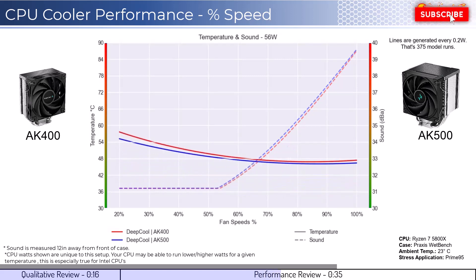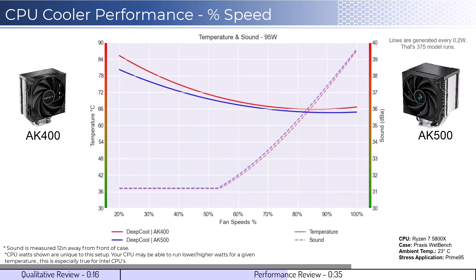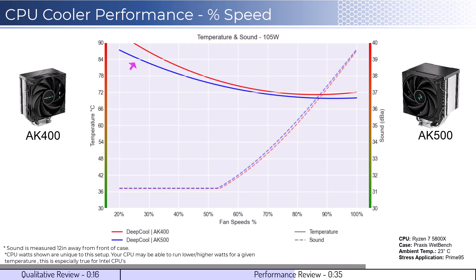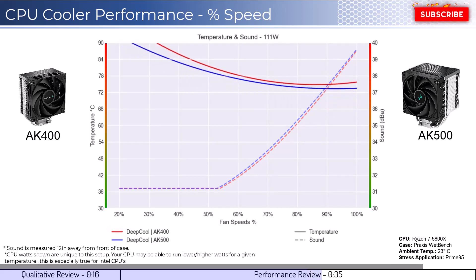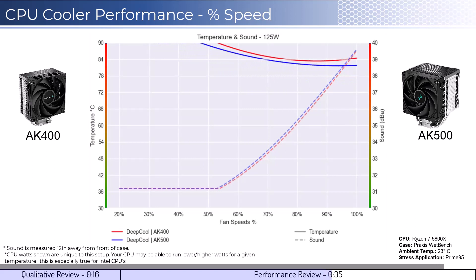As we increase the watts to 105, which is what the CPU is rated for, we can see that the AK500 cooler has slightly better cooling performance at lower RPMs, but this benefit diminishes as the fan increases to 100% fan speed. Next, we will look at the CPU overclocked to 125 watts. This shows that the AK500 retained slightly better cooling performance over the AK400.